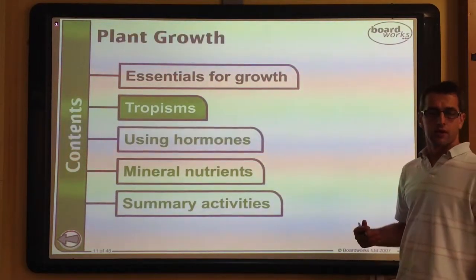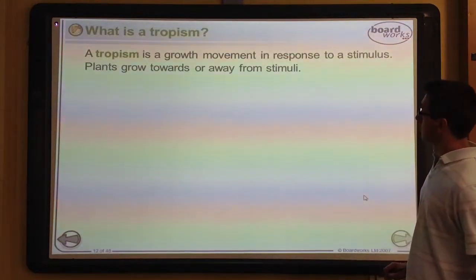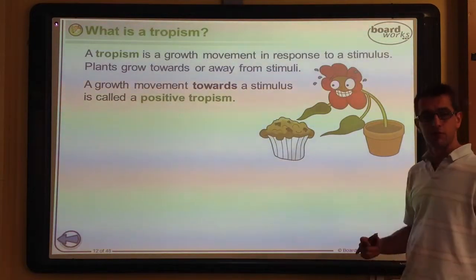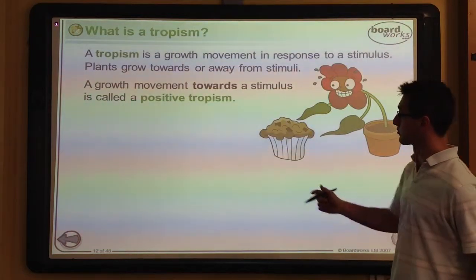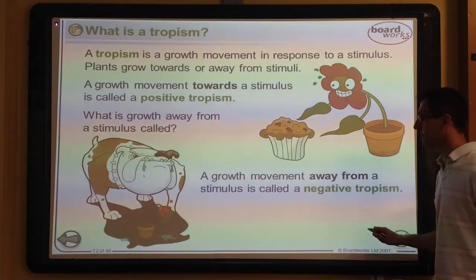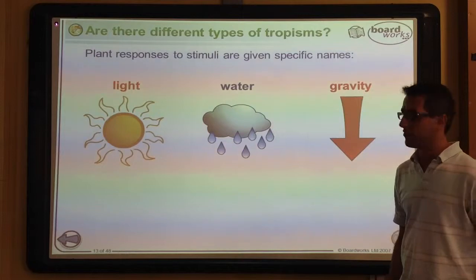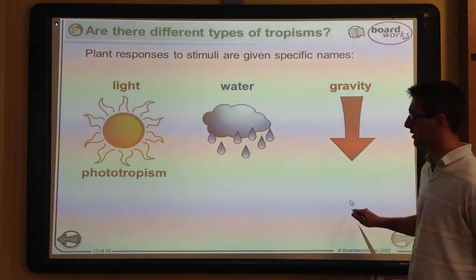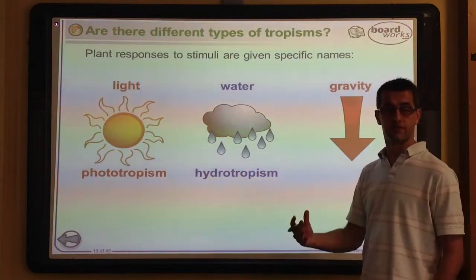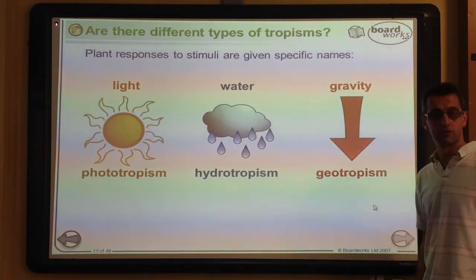A plant responding to a particular stimulus is what we refer to as a tropism — the movement of the plant in response to that stimulus, either growing away from it or towards it. Growing towards a stimulus is called a positive tropism, and growing away is a negative tropism. Responding to light is called phototropism, water is hydrotropism, and gravity is geotropism, sometimes known as gravitropism.